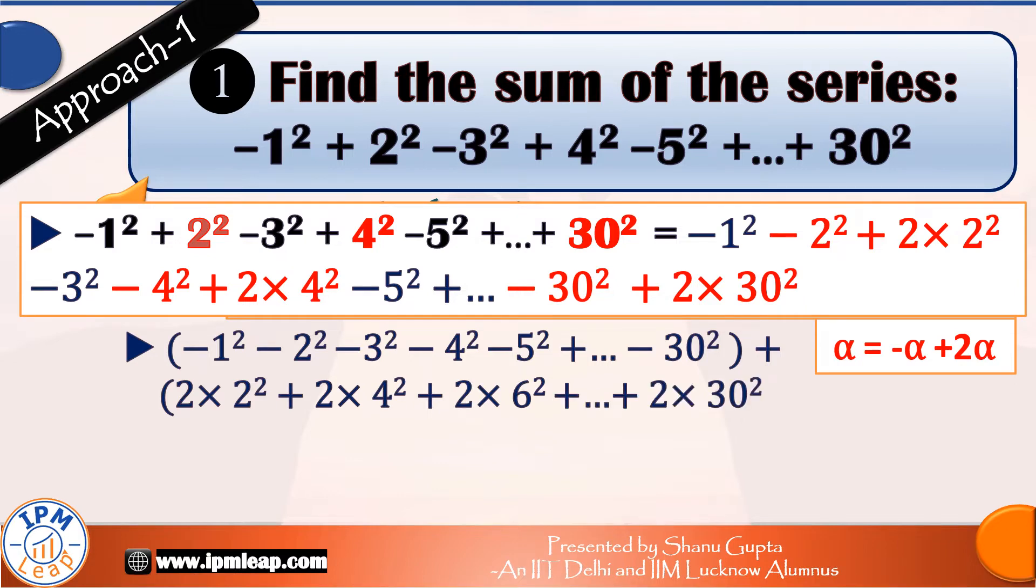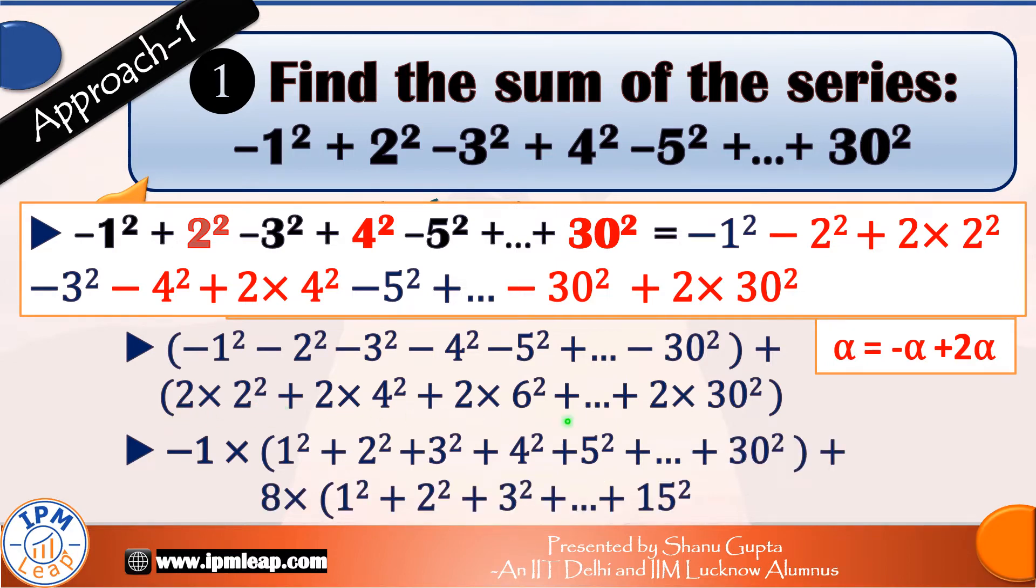Okay, so far so good. We can take minus 1 common from the series of negative squares. And from the series of positive squares, we can take 2 into 2 square common from all the numbers as they are all even. So the second series looks like 8 into 1 square plus 2 square plus so on up to 15 square.